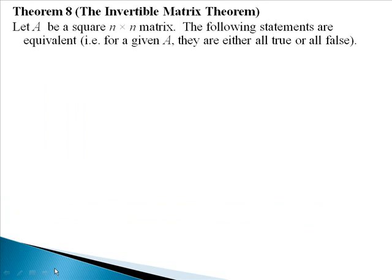For this, we're going to let A be a square n by n matrix, and then the following statements are equivalent, meaning for a given matrix A, they're either all true or they're all false.